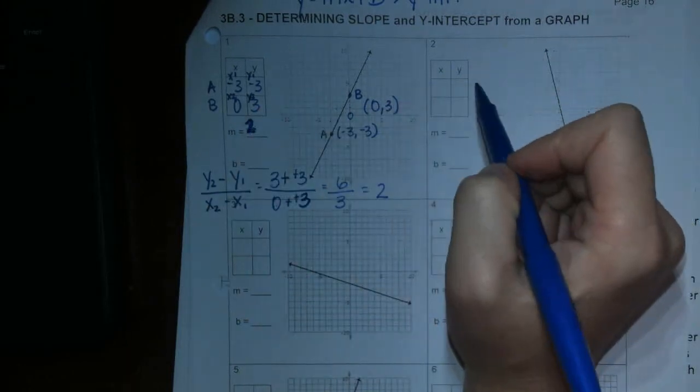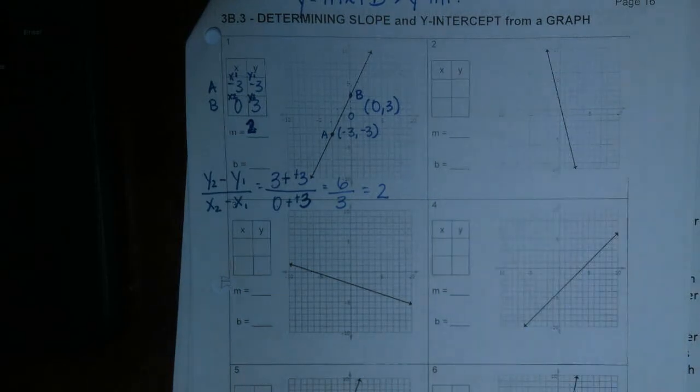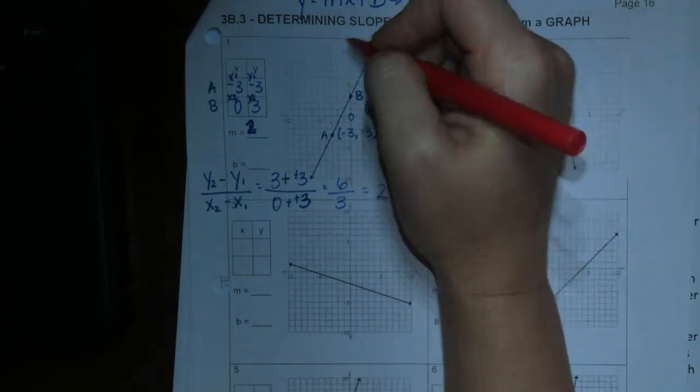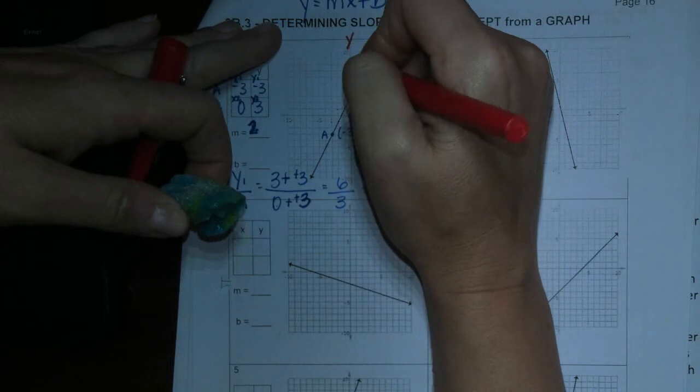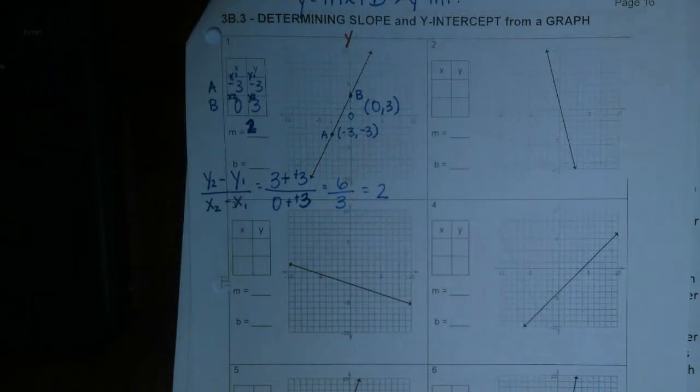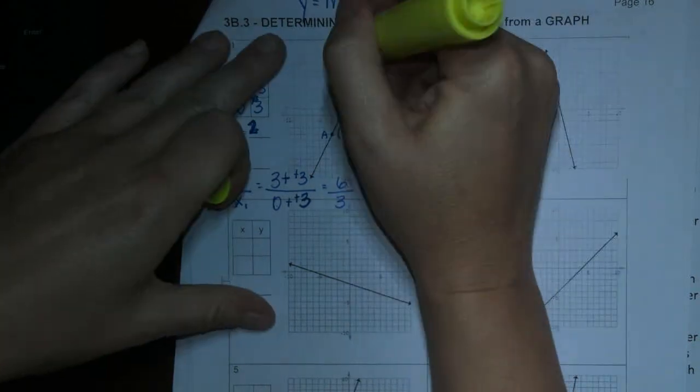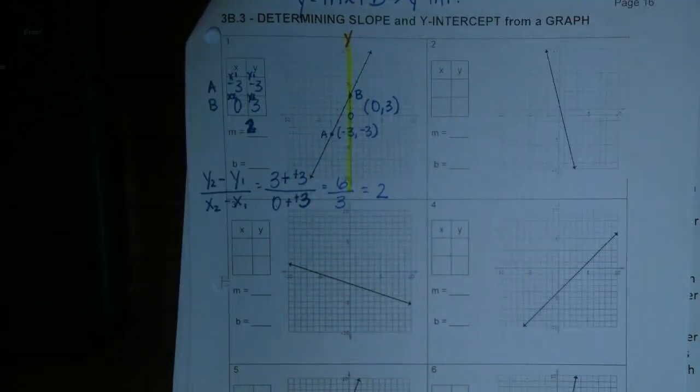Now your b is your y-intercept. Where does it cross? Where does it intercept the y-axis? Well, this is your y-axis. I'm going to highlight that for you. That's your y-axis.